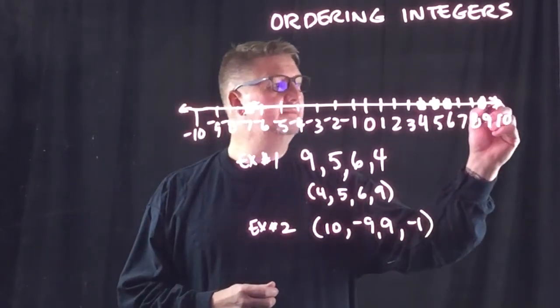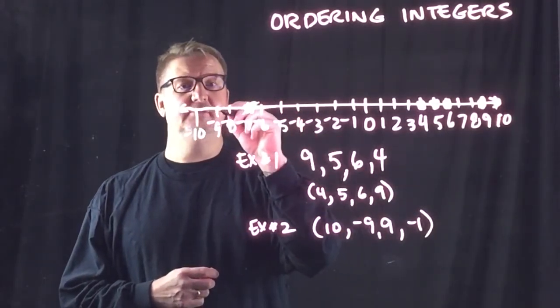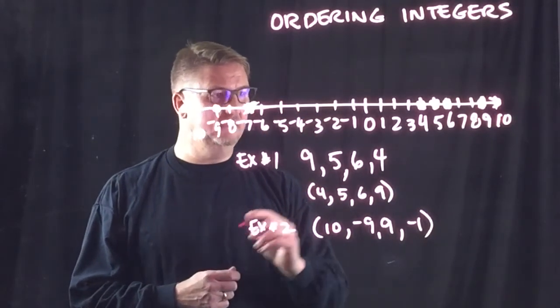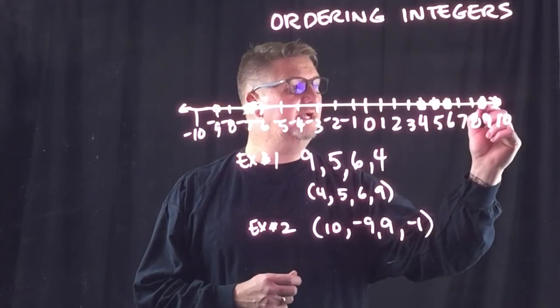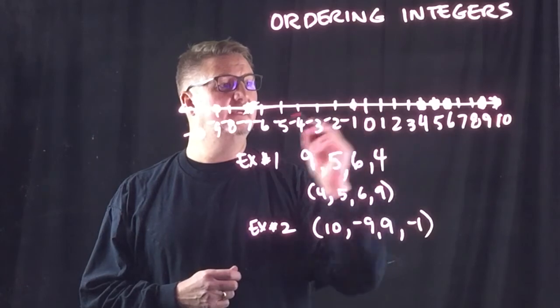So, 10 is right here on my number line. Negative 9 is over here on my number line. Positive 9, well, I had that before. That's right there. And then negative 1 is right there.